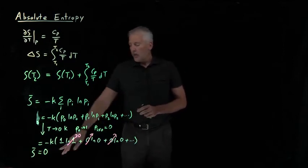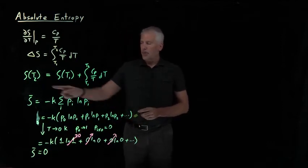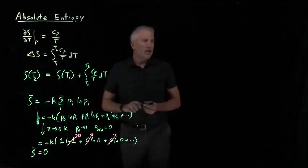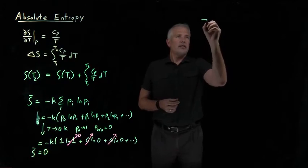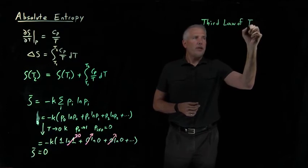So we know that at zero Kelvin, the entropy of the system is zero. So what that means is, actually let me write that down. That's an important statement, important enough that we call it the third law of thermodynamics.